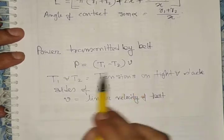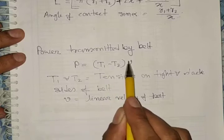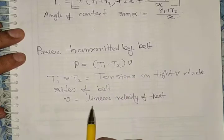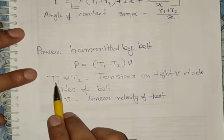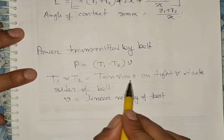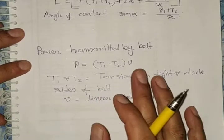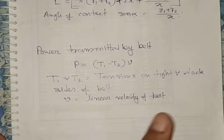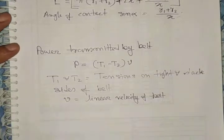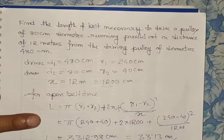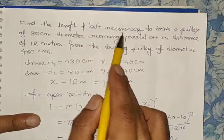Power transmission by the belt: P = (T1 − T2) × v, where v is the linear velocity of the belt and T1, T2 are tensions on the tight side and slack side respectively.